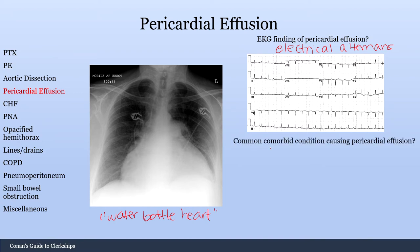What is a common comorbid condition causing pericardial effusion? Say it's a 20-year-old male who recently had a viral illness and is now presenting with chest pain that is relieved when leaning forward — that would be acute pericarditis. This can often present with pericardial effusion.